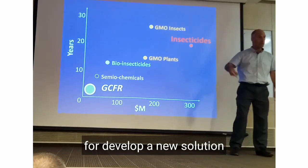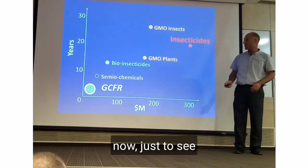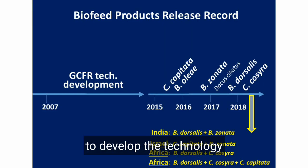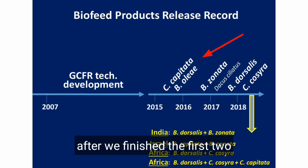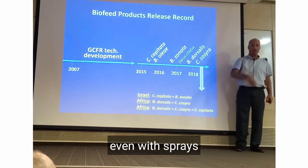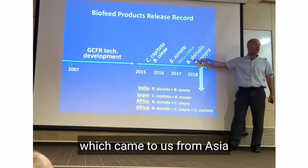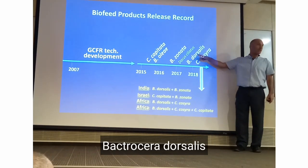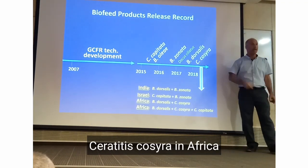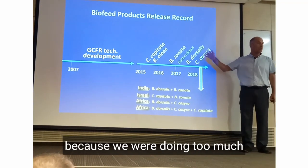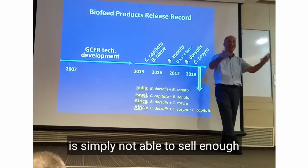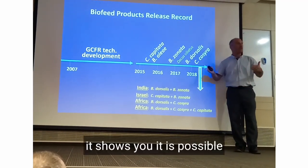Extremely short time to develop a new solution at the same price. This is the timeline: it took us many years to develop the technology, but once we finished the first two — which are in Israel and for which no one has a solution even with sprays — we moved on to Bactrocera zonata from Asia, and Bactrocera dorsalis, the number one in the world. We actually stopped the R&D because we were doing too much and our business manager simply couldn't sell fast enough. But it shows it is possible.